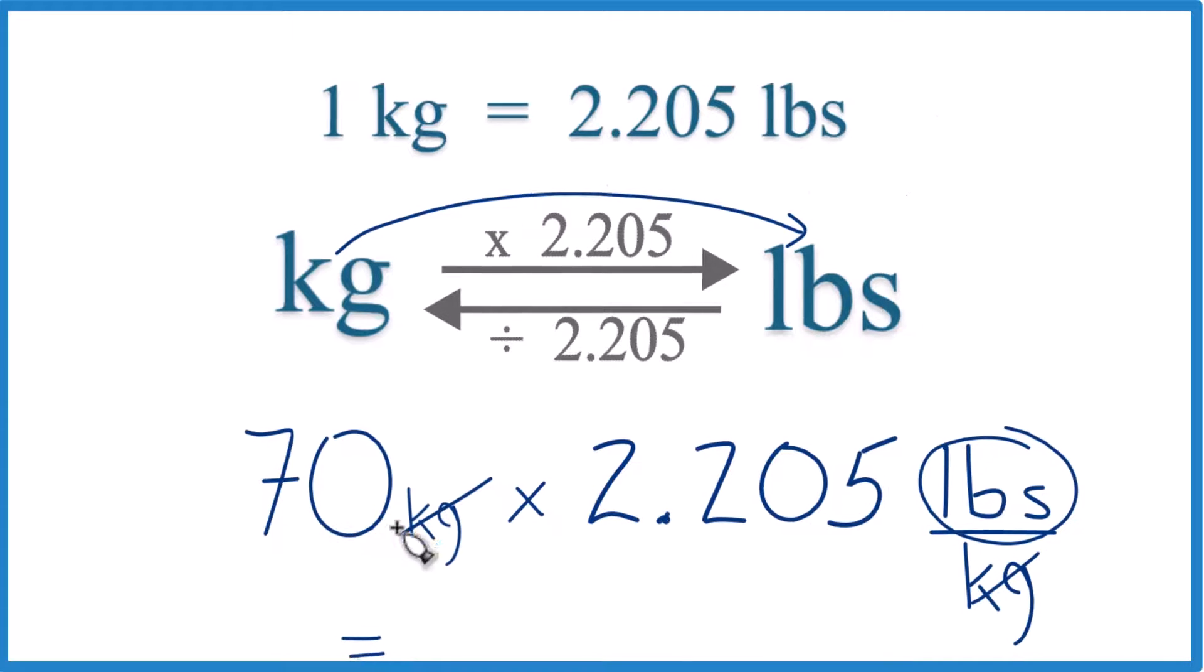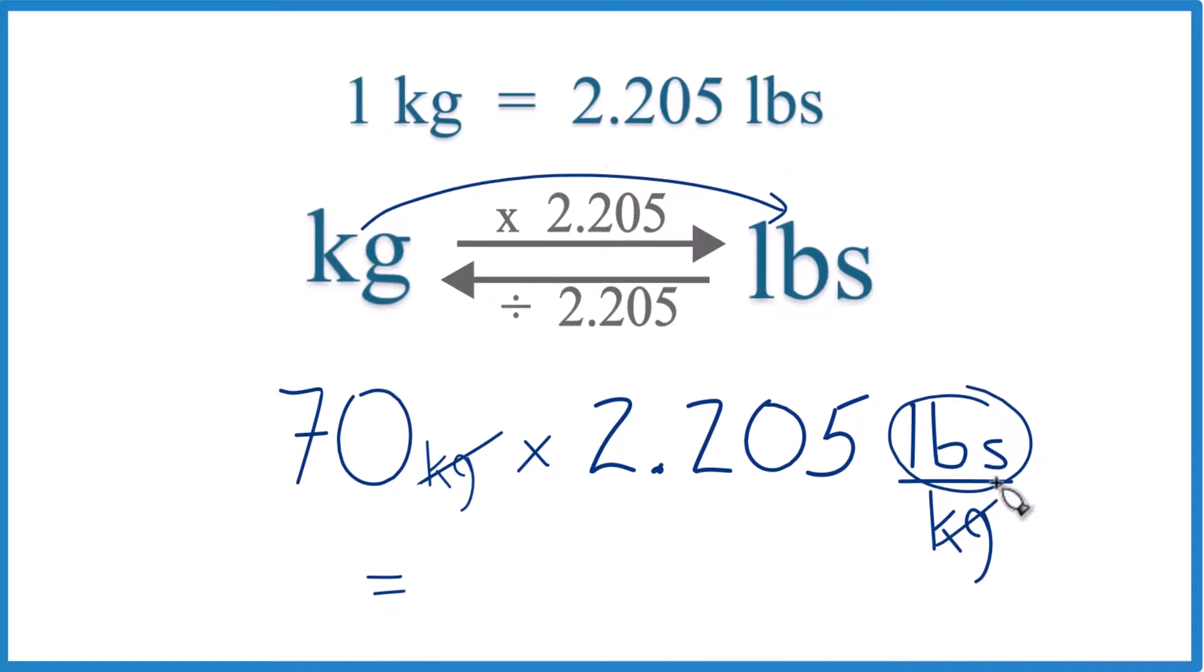We end up with 70 times 2.205 pounds, and we get 154.35, I'm going to call it 154.4, and our units, we were going from kilograms to pounds, we only have pounds left here anyway, so 154.4 pounds.